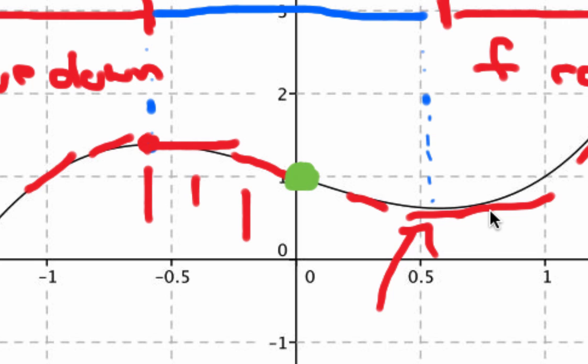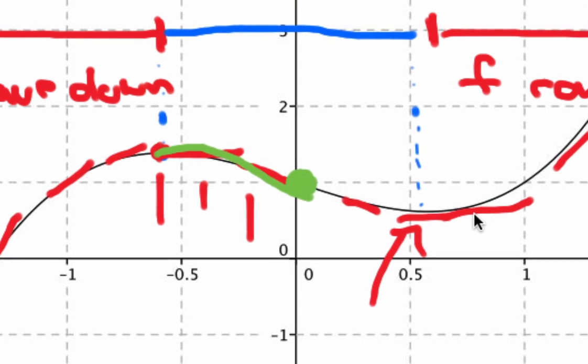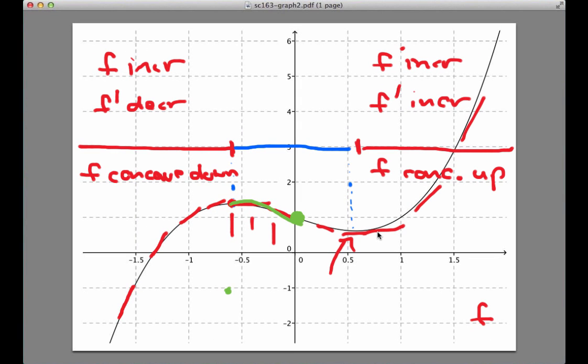So we can say that from this point to here, the slopes are decreasing. And so this means that from, let me draw this down underneath. From here to here, my function is concave down because the slopes are decreasing. Okay, f is concave down on that little interval.